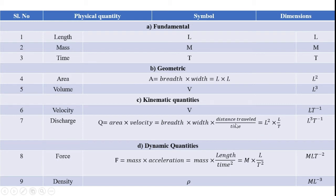Distance traveled is always represented with capital L, and time is always denoted by capital T. Solving this gives L cubed by T, which can be written as L cubed into T power minus 1. So every equation can represent dimensions as L cubed T power minus 1.